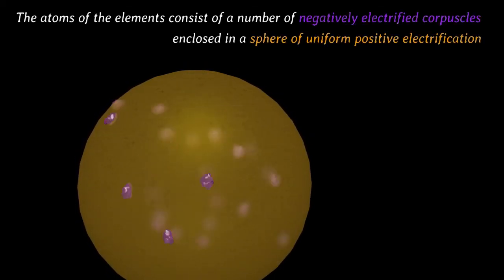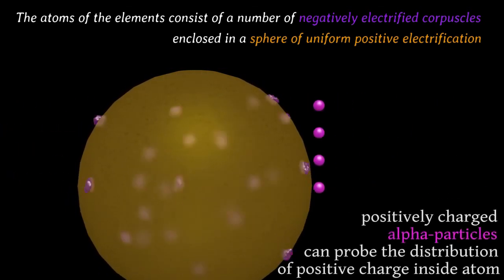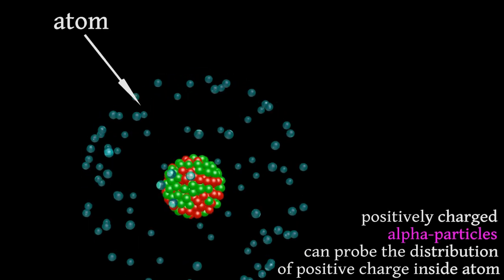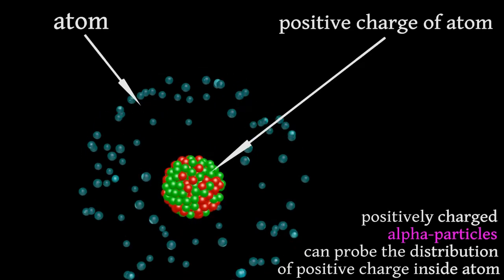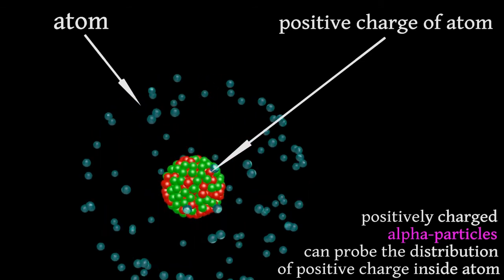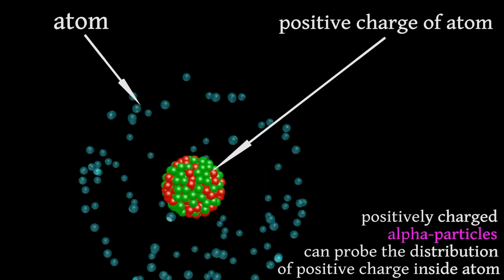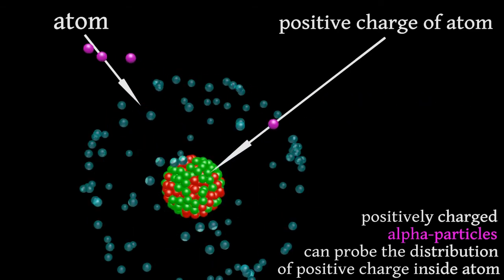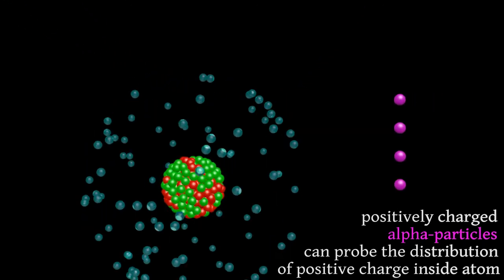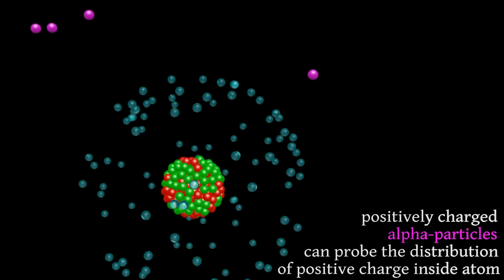Rutherford showed that within this model alpha particles cannot scatter at large angles. That is, alpha particles pass through atoms with small deviation. To explain the results of the gold foil experiment, Rutherford came to the conclusion that the positive charge in an atom is concentrated only in a small part of it. Rutherford showed that